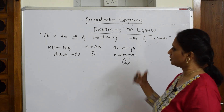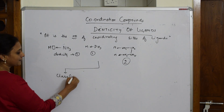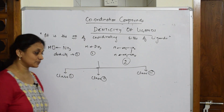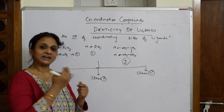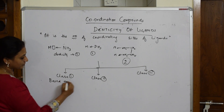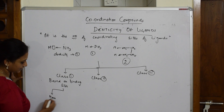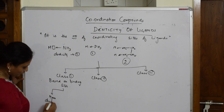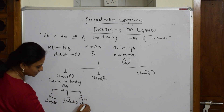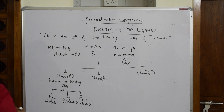Based on the attacking site, ligands are classified into three categories. Class 1 classifies ligands based on their binding sites — that is, denticity. Under Class 1, ligands are divided into monodentate ligands, which link by one site; bidentate ligands, which link by two sites; and polydentate ligands, which link by more than two sites.